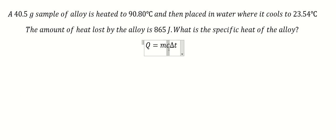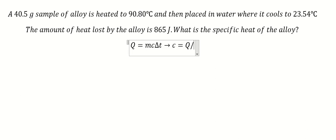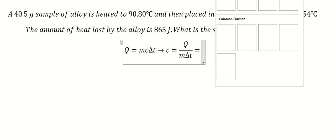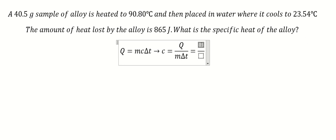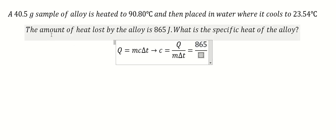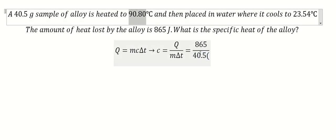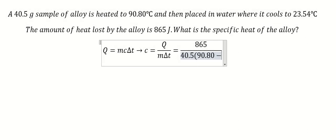The question asks us to find c, so c equals Q divided by m times delta T. In this one, we have Q that is this one, m that is this one, and the difference in temperature is this one minus this one.